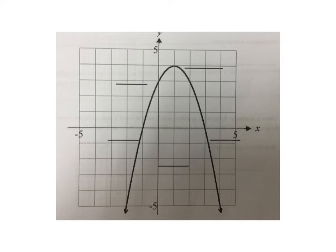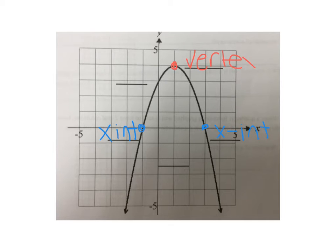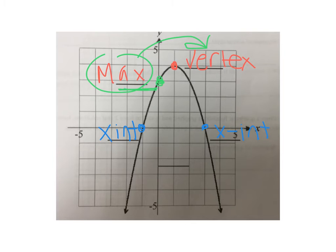Number 11 gives you a graph and asks you to label the x-intercepts, y-intercept, vertex, and whether it is a max or min. The two points where the parabola crosses the x-axis are the x-intercepts. The vertex is the highest point on this parabola, so it is a maximum. The dot where the parabola crosses the y-axis is the y-intercept.